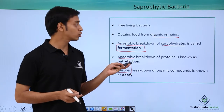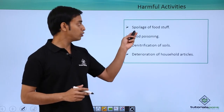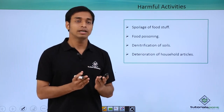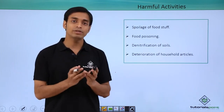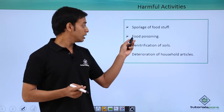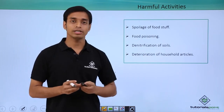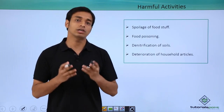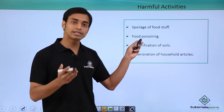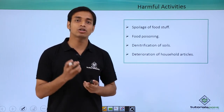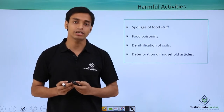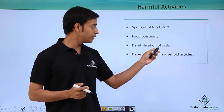Now let us look at the different harmful activities performed by saprophytic bacteria. First is spoilage of foodstuff — these bacteria are responsible for damaging normal food which we use in our household. They are also responsible for causing food poisoning, which is a very common disease in human beings. Food poisoning results from consuming damaged or decayed food caused by saprophytic bacteria.